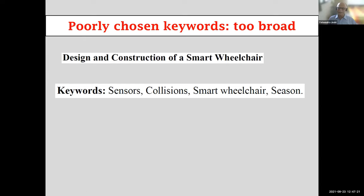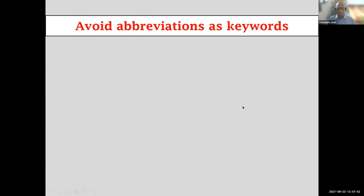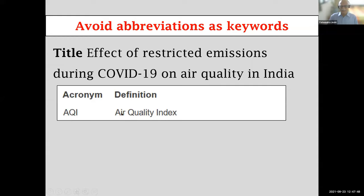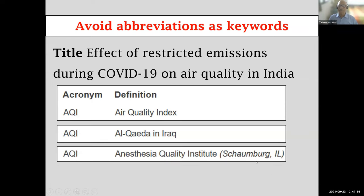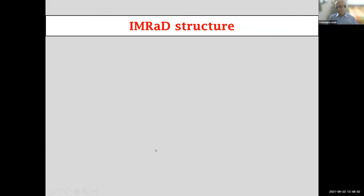Do not consider keywords a mere formality — it is your chance to get your paper noticed by many more people. Good keywords are specific two- or three-word phrases not already in the title. Avoid abbreviations as keywords — 'AQI' for instance could mean air quality index or something else entirely. In general, abbreviations do not make good keywords.